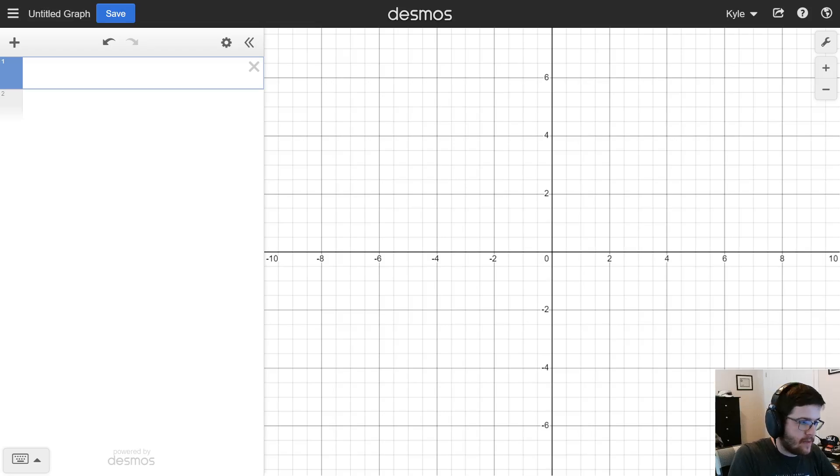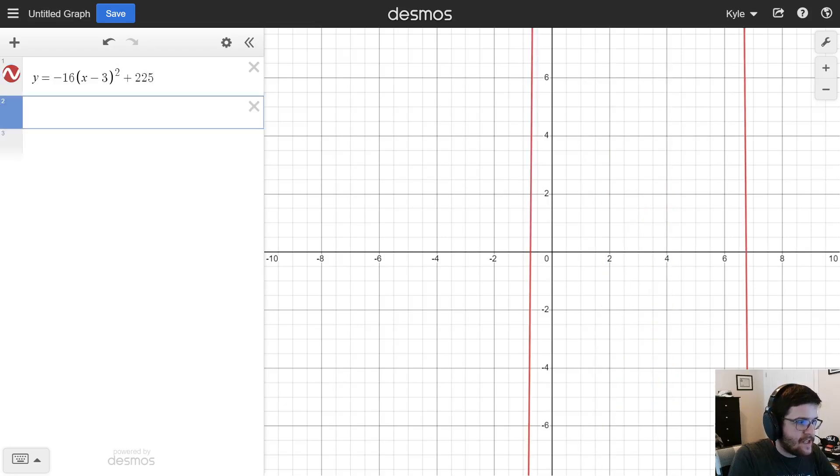So, let's go to Desmos and solve the question. Okay, so first thing I'm going to do is, I'm going to type in the equation we just came up with. I feel like that was the hardest part, was knowing vertex form, and then just kind of translating those sentences to points. So, negative 16(x minus 3) squared plus 225. And I see that this does not look very good.